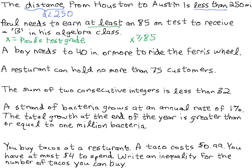A boy needs to be 40 inches or more to ride the Ferris wheel. We label the variable H as the boy's height. We know H needs to be 40 inches or more, so in order for him to ride the Ferris wheel, H ≥ 40 inches. If he's exactly 40 inches he can ride, so H can equal 40, but it can't be less than 40. All values greater than or equal to 40 satisfy this inequality.